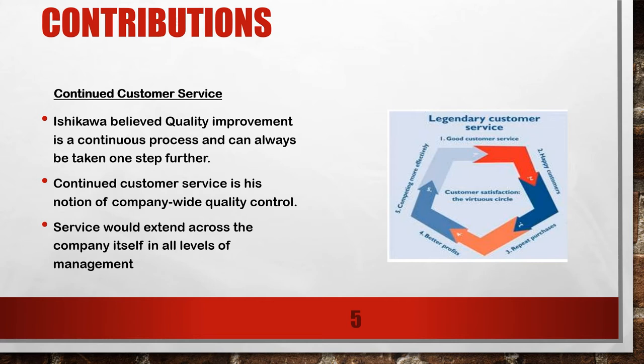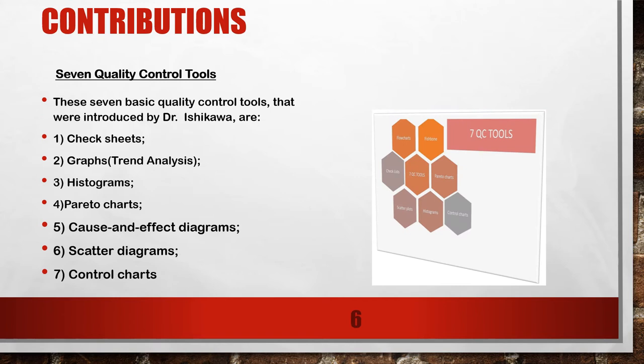Ishikawa believed quality improvement is a continuous process and can always be taken one step further. Continued customer service is its notion of company-wide quality control. Service would extend across the company in all levels of management. The legendary customer service model states that good customer service results in happy customers, which leads to repeated purchases, better profits, and the organization competing more effectively.